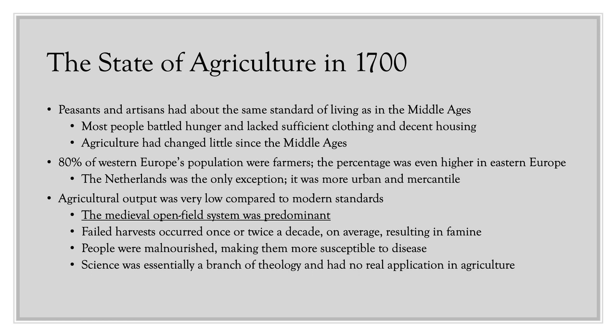This percentage was even higher in Eastern Europe, where serfdom was being codified. The only exception was the Netherlands — a small, compact country that was more urban and mercantile, with a strong vibrant commercial economy especially from the 17th century. Agricultural output was very low compared to modern standards.